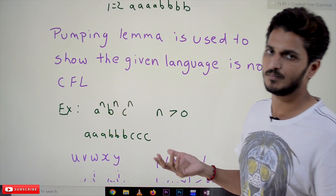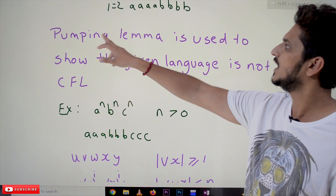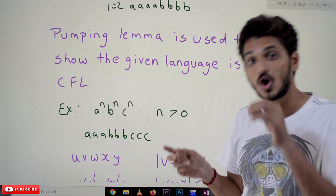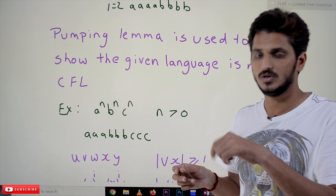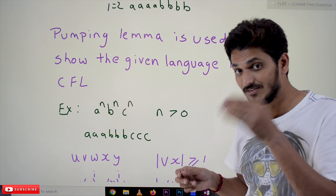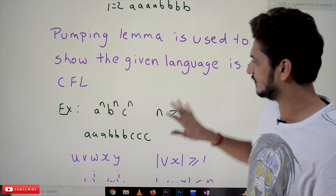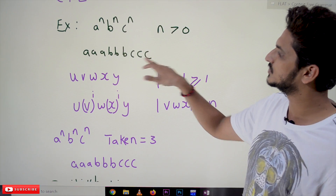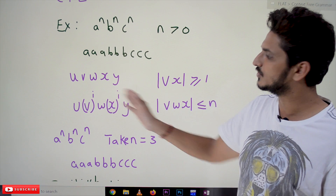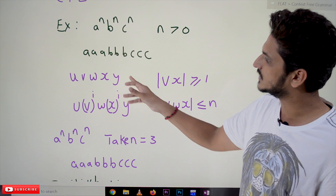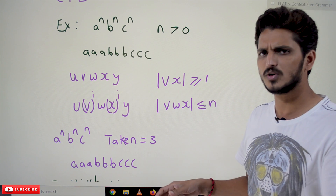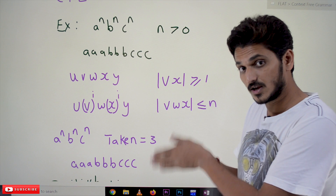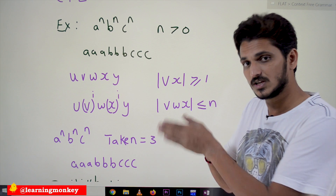Pumping lemma is used to show that the given language is not a context free language. For a^n b^n c^n, we take the input string and divide it into five parts: U, V, W, X, Y. We check all the possibilities, and for each possibility we show that pumping is not going to generate the strings that are present in the language.